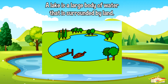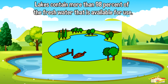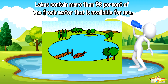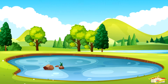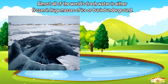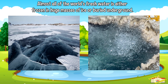A lake is a large body of water that is surrounded by land. Lakes contain more than 98% of the fresh water that is available for use. Almost all of the world's fresh water is either frozen in huge masses of ice or buried underground.